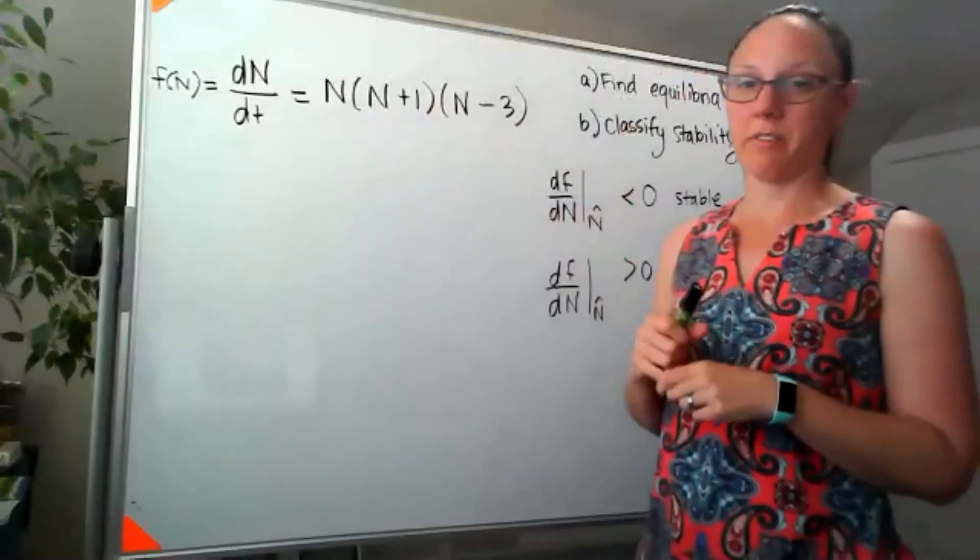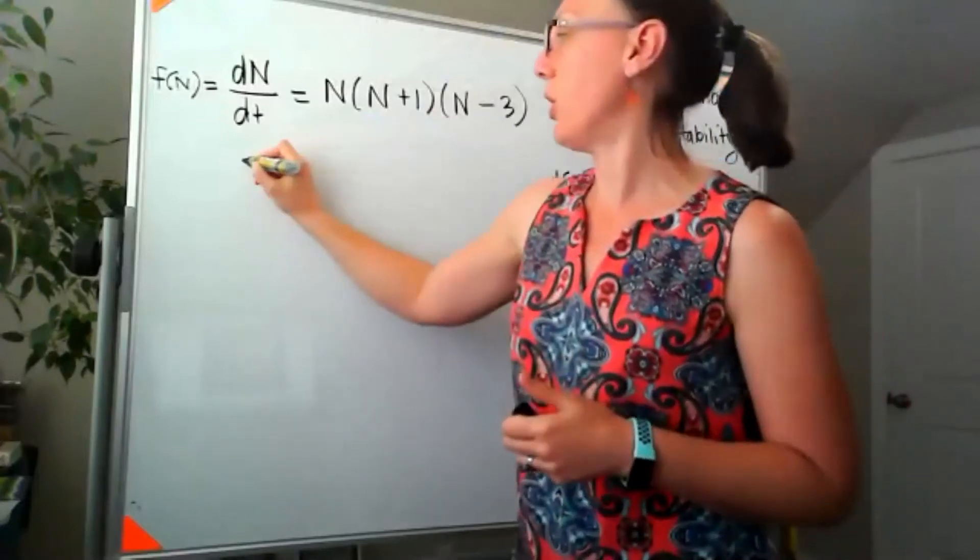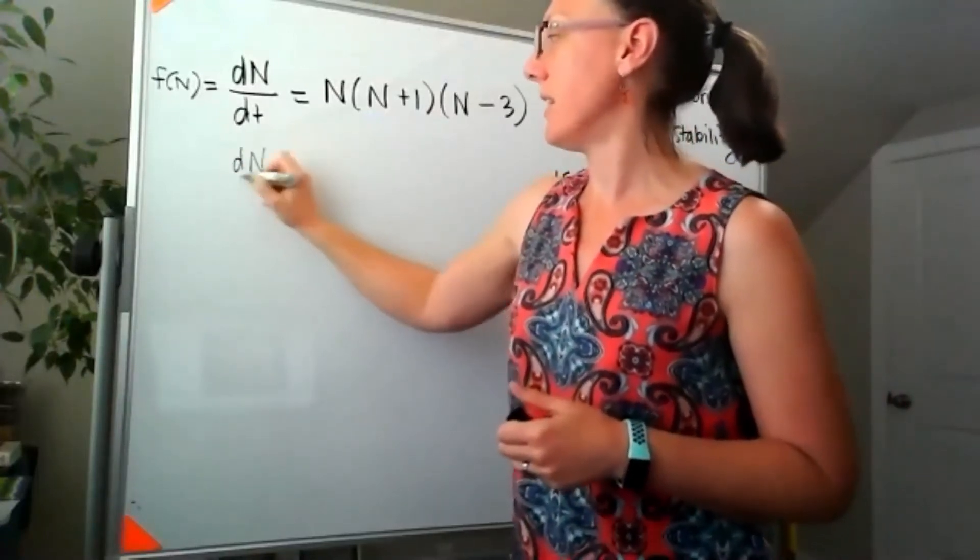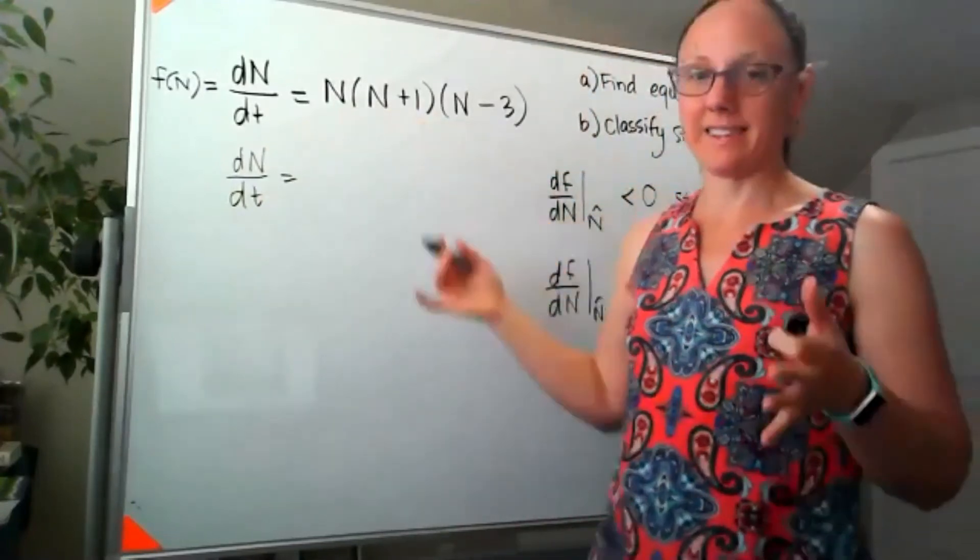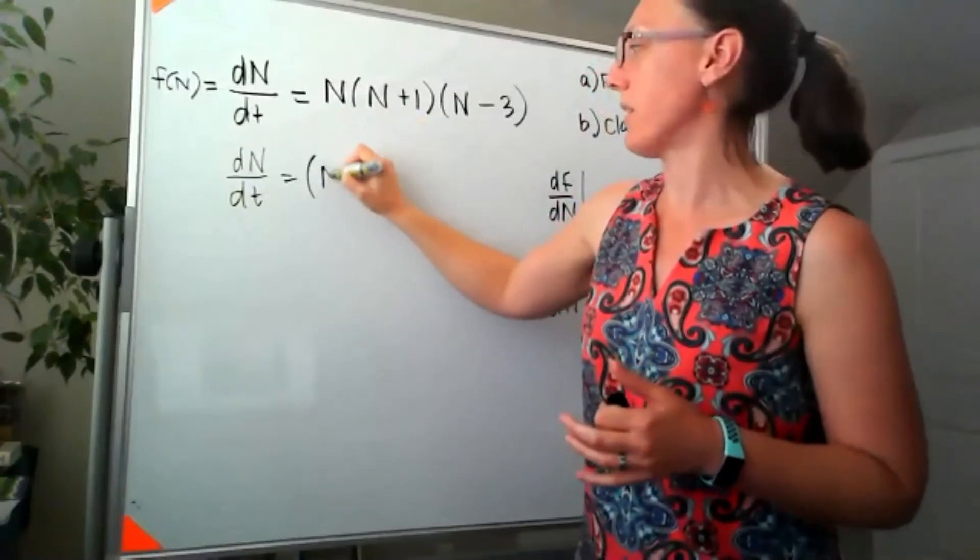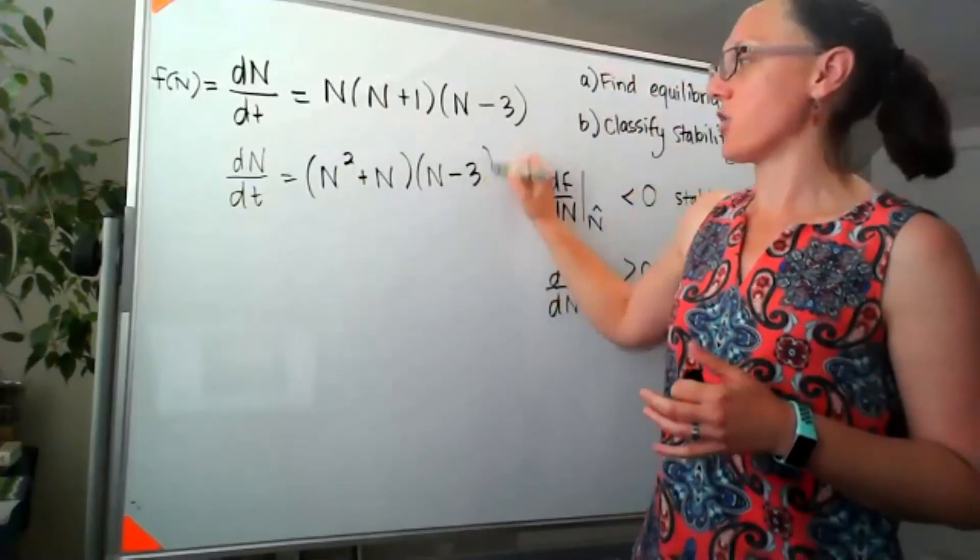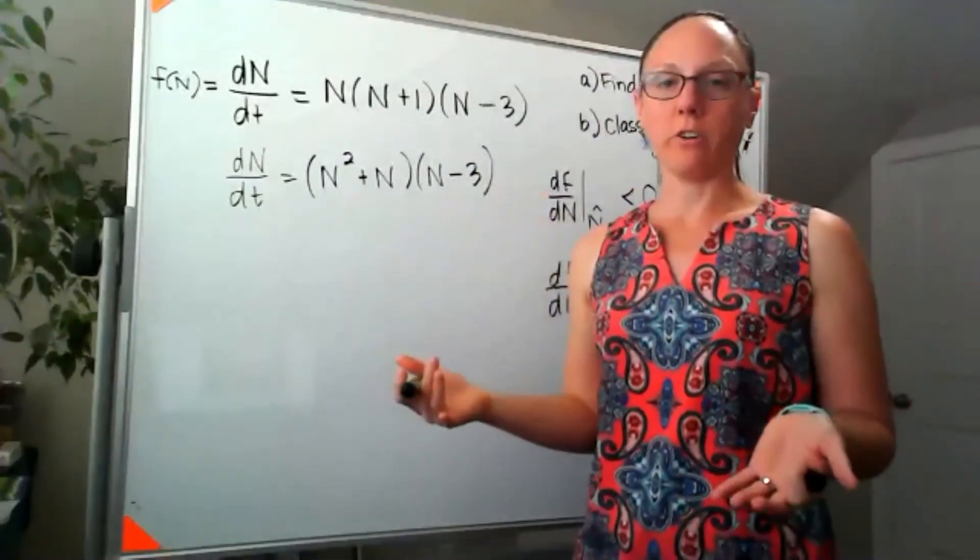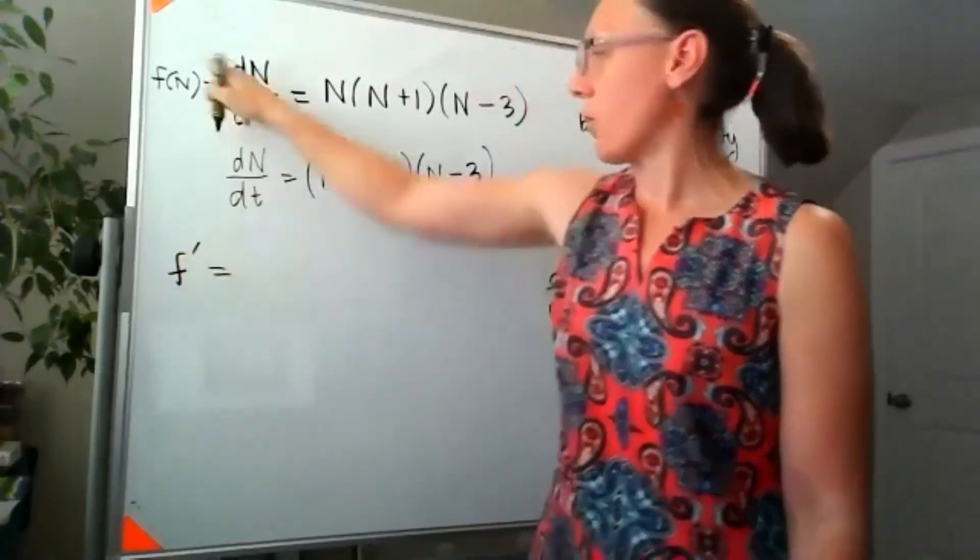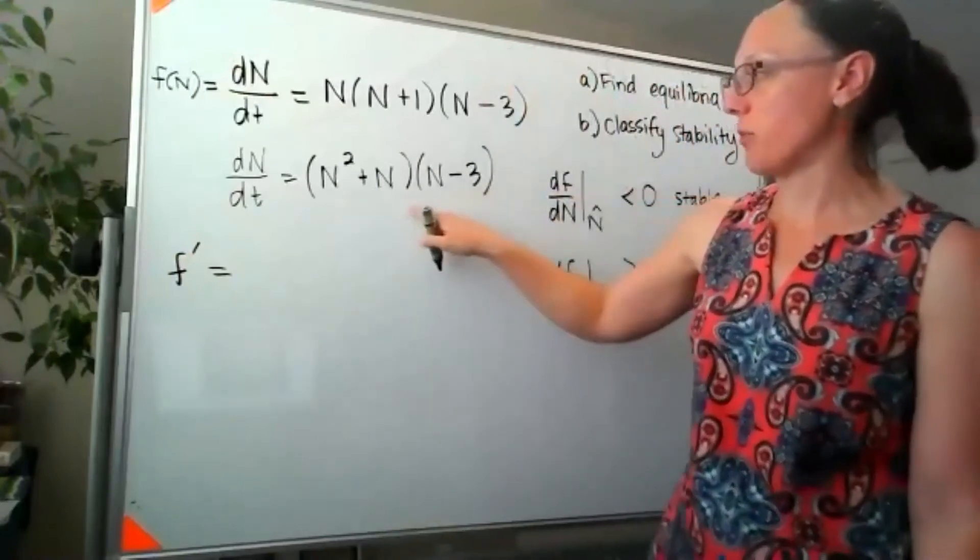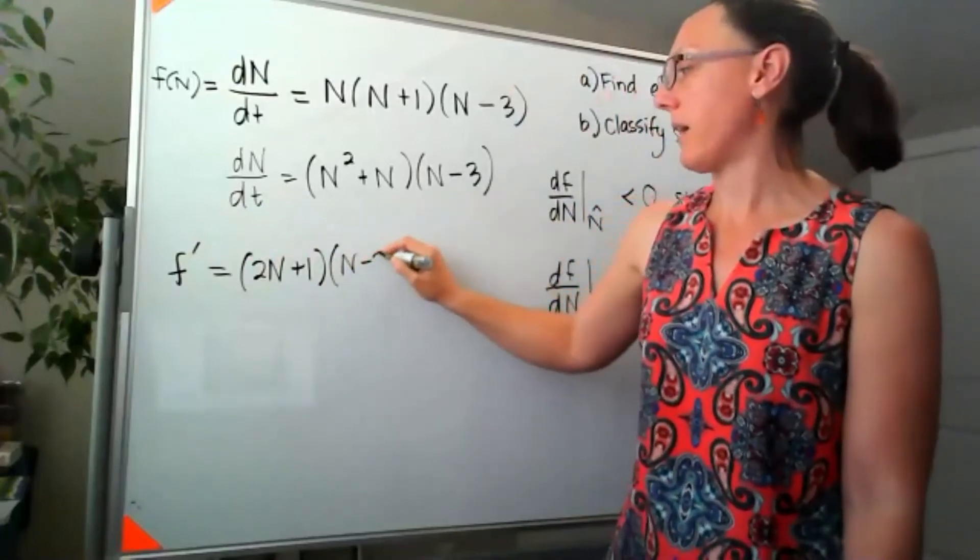If I'm going to take the derivative of that, we could use a triple product rule. I'm going to save myself a little bit of work and do some algebra up front. And if I distribute that n in, then at least I only have a single one product rule to deal with. So I'd have the (n²+n) times (n-3). You could go ahead and multiply that all the way out before you took the derivative. I'll just go with the product rule.